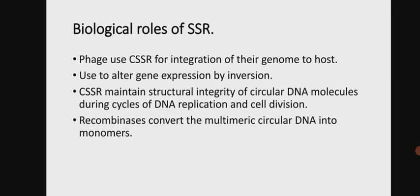Regarding the biological roles of site-specific recombination: phages use site-specific recombination for integration of their genome into the host, and it is also used to alter gene expression by inversion. Site-specific recombination maintains the structural integrity of circular DNA molecules during cycles of DNA replication and cell division. Recombination also converts multimeric circular DNA into monomers.